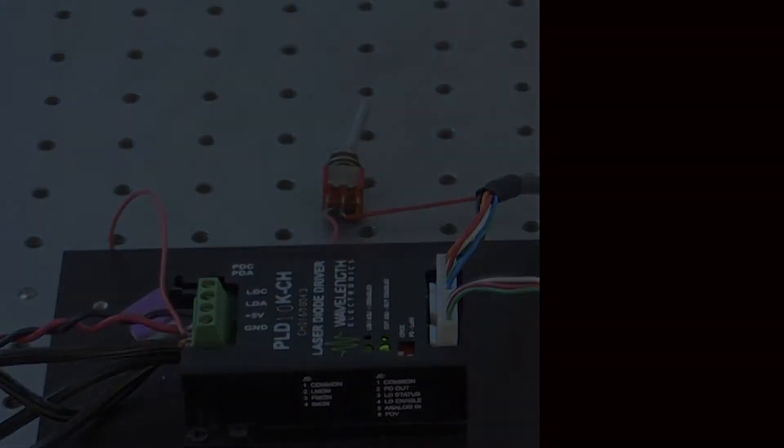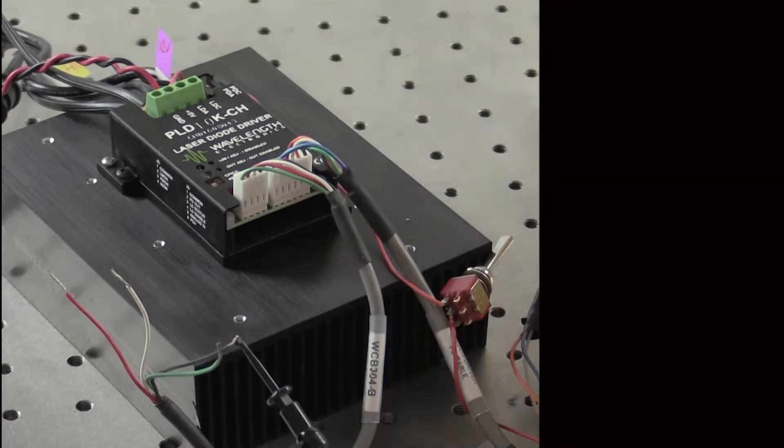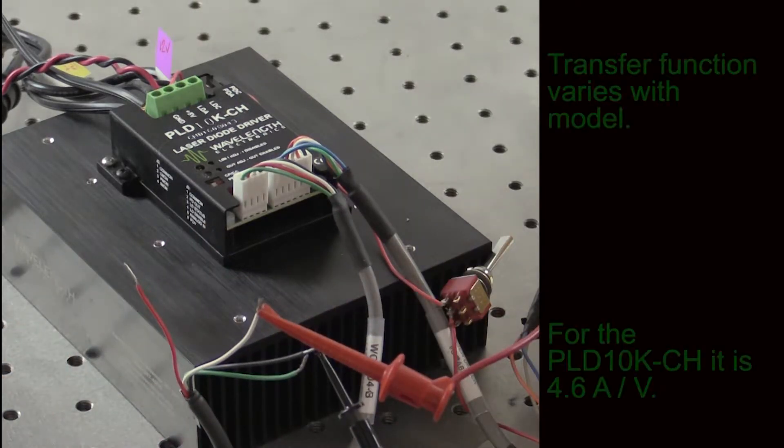The first voltage to monitor is the limit current monitor. This will be between 0 and 2.5 volts. Put the common lead of the multimeter on pin 1 of J2 and the positive lead on Elmon, pin 2.